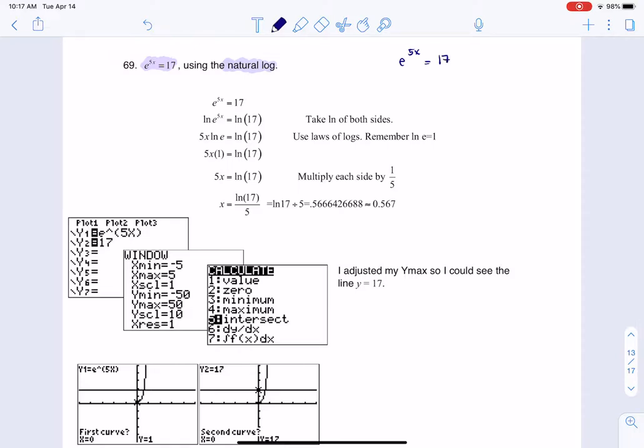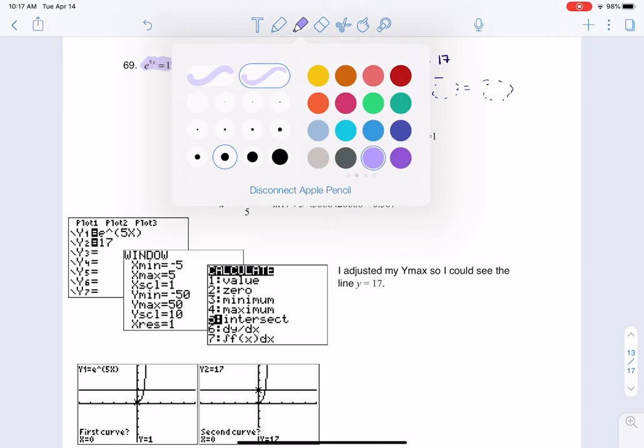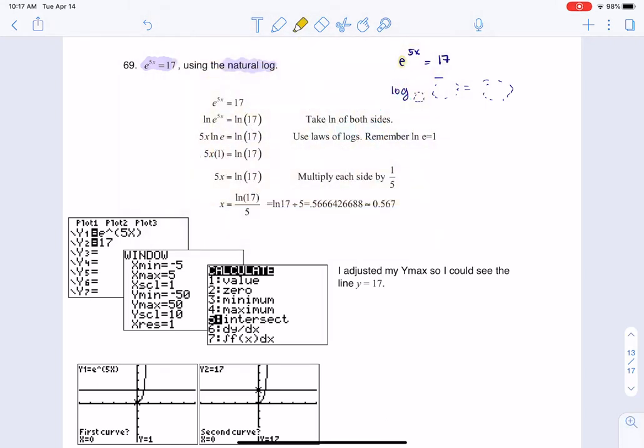So I need to change that into some kind of logarithm. There'll be something in the base, something in the argument, and it'll be equal to something. Those three things. And we have to assign e, 5x, and 17 to one of these three positions. That's how you go from an exponential equation to its equivalent logarithmic equation.